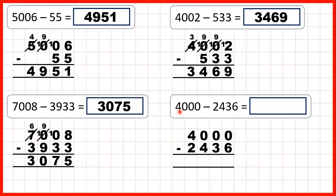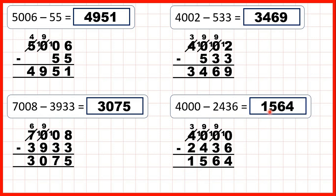Finally, let's work out 4,000 minus 2,436. We can't do 0 minus 6 using the column method — go to the left, go to the left again, go to the left a third time, then 1 less, 1 in front, 1 less, 1 in front, 1 less, 1 in front. Now, 10 minus 6 is 4, 9 minus 3 is 6, 9 minus 4 is 5, and 3 minus 2 is 1. So our answer is 1,564.